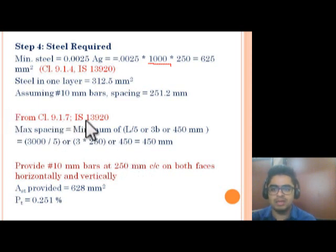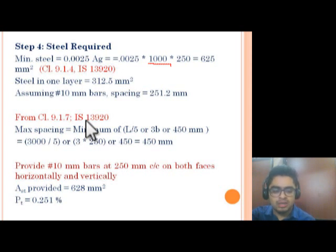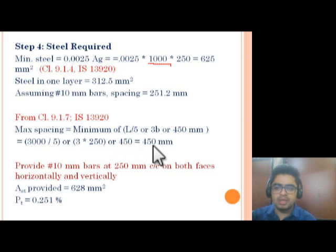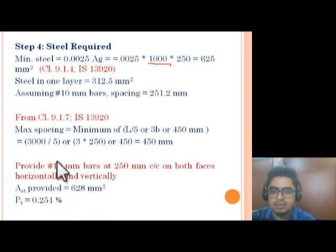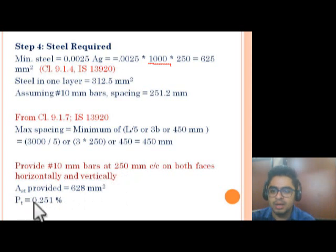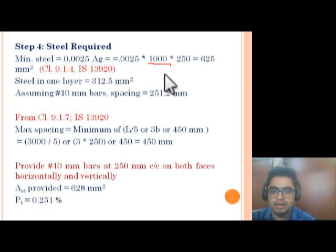From IS 13920 clause 9.1.7: maximum spacing of reinforcement in either direction shall not exceed the smaller of Lw/5 or 3 times the wall thickness or 450 mm. With Lw = 5000 mm: Lw/5 = 1000 mm. So the maximum spacing is 450 mm. Providing 10 mm bars at 250 mm center-to-center, the area of steel provided per layer is 68 mm² per unit... giving Ast provided = 628 mm². We provide 10 mm bars at 250 mm center-to-center, and Ast provided per meter = 628 mm².